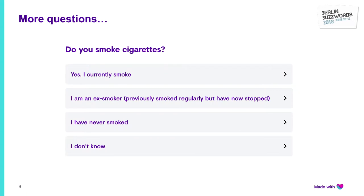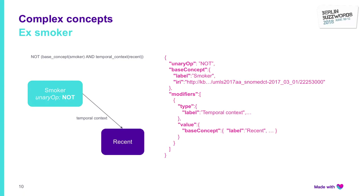If you continue with the flow and say you have a cough, most likely you are going to be asked if you are a smoker. This is to show how we deal with what we call complex concepts. If you say you are an excess smoker, we have an entity for that in the knowledge base. But also we can represent the fact that a particular patient is not currently a smoker — in this case, we would have a base concept of smoker and a set of modifiers. Modifiers themselves can be complex concepts — this is a recursive definition.